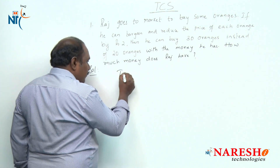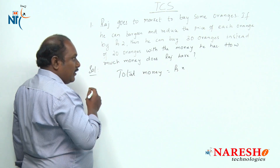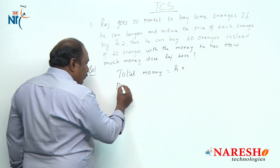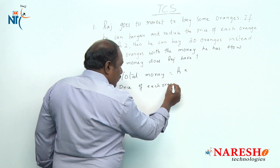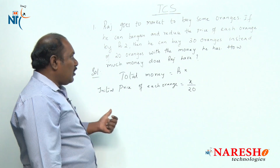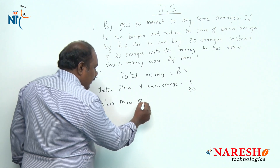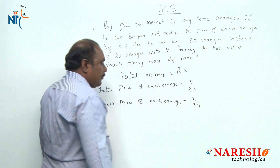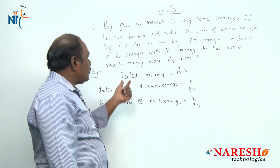If we assume the total money Raj has is rupees x, then initially he was able to buy 20 oranges, so the initial price of each orange before bargaining should be equal to x divided by 20. Later on after bargaining, he is able to buy 30 oranges, so the new price of each orange after bargaining should be x divided by 30. According to the question, the difference between the initial price and the new price should be 2 rupees.